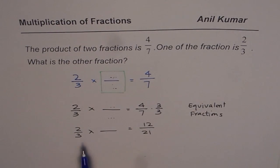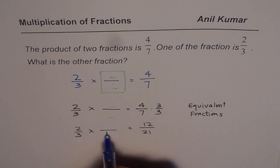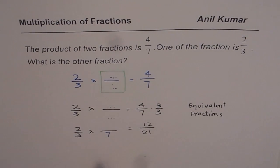So we could get from 3 to 21 if I multiply by 7. And to get 12 from 2, I need to multiply by 6. So therefore, our answer is,